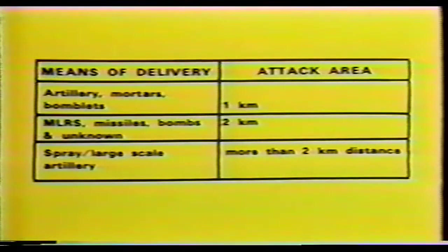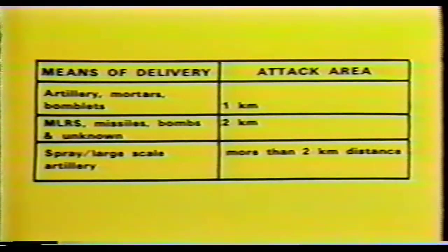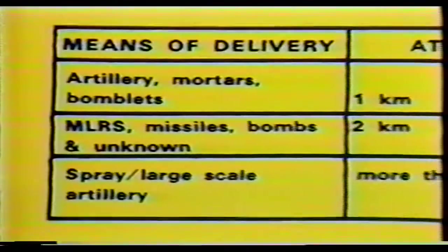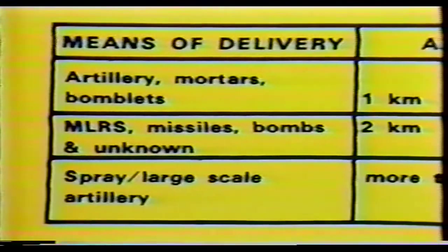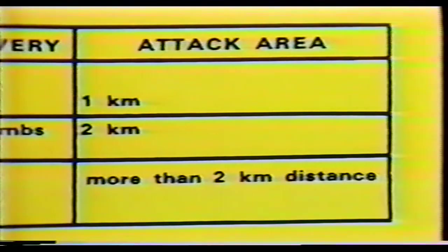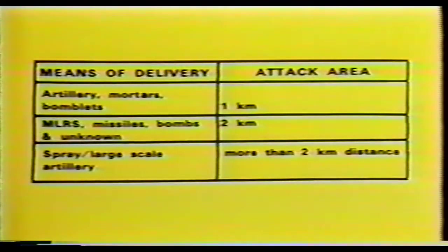For ground-contaminating agents, the size of the attack area can be determined by comparing the means of delivery. When the agent is delivered by artillery, bomblets, or mortars, the attack area would be 1 kilometer in size. Agents delivered by multiple rocket launchers, missiles, bombs, or unknown munitions can produce an attack area up to 2 kilometers in radius. Agents delivered by spray attack or from a large-scale artillery attack by several battalions could result in an attack area extending more than 2 kilometers in a straight line.